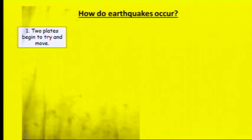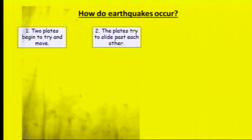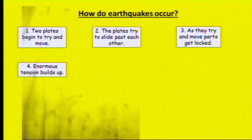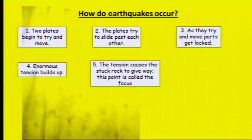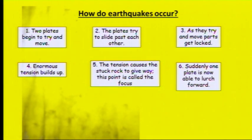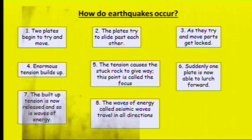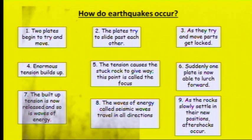How do earthquakes occur? The two plates begin to try and move — they slide past each other, towards each other, or away from each other. At a conservative plate boundary, as they move past each other their parts will get locked. The tension builds up and eventually they give way at the focus point. One plate lurches forwards because the tension has been released, and we get lots of waves of energy called seismic waves. As the rocks settle into their new positions, we tend to get lots of aftershocks, which are generally smaller earthquakes.